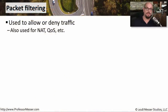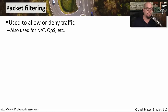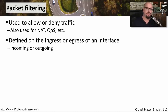An access control list is a packet filter — a way to allow or disallow traffic from flowing through a certain part of the network. You might also see access control lists used in conjunction with network address translation to determine what IP addresses need to be translated, or with quality of service to know what type of traffic flows need what type of priority. It's common to see ACLs configured on a router interface.